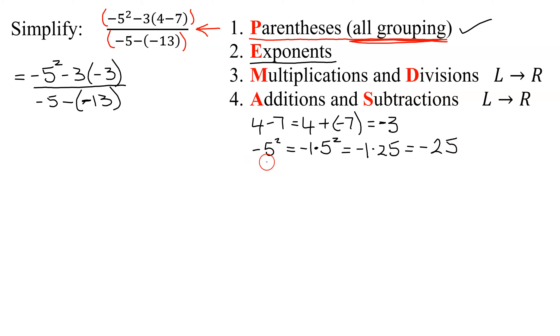A lot of students think the answer to this is positive 25. If I wanted to square the negative along with the 5, I would have had to have written negative 5 all squared.